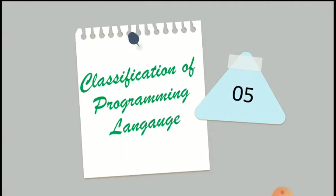Hello students, welcome to the fifth session of C programming. In the previous session we studied the first type, that is machine level language. In today's session we will study the second type, that is assembly level language, and the third type, that is high level language. So let's start with this session.